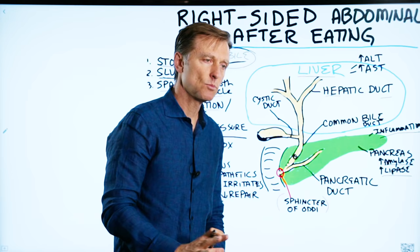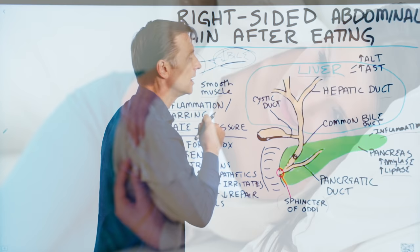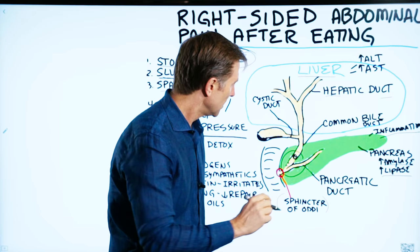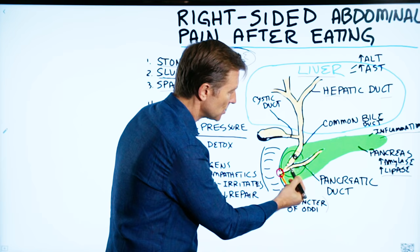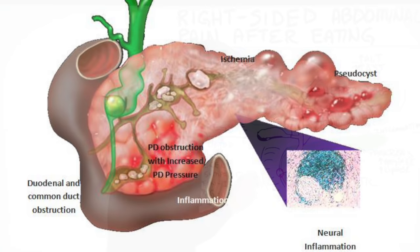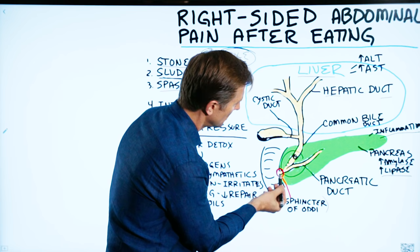What happens when you don't have stones and you still have this pain? Or let's say they remove the gallbladder and you still have this pain. What's usually happening is that the tiny valve — the sphincter — is not relaxing properly, causing a lot of pressure and inflammation. There could even be scar tissue without any stones at all. What would cause a spasm in this tiny area, preventing the flow of digestive juices or the inability of this valve to relax and allow things to drain properly?